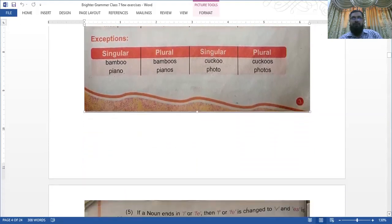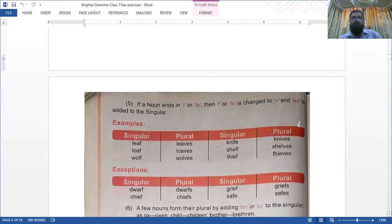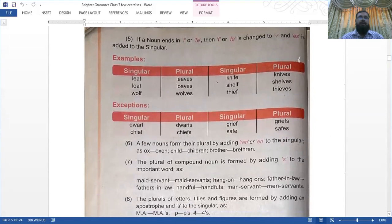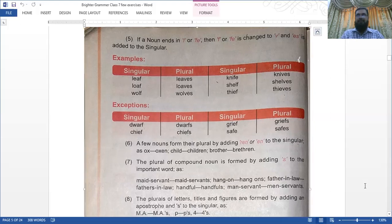Number five: if a noun ends in F or FE, then F or FE is changed into V and ES is added to the singular. Like leaf/leaves, loaf/loaves, wolf/wolves, knife/knives, shelf/shelves, thief/thieves. Exceptions: dwarf/dwarfs, chief/chiefs, brief/briefs, safe/safes.